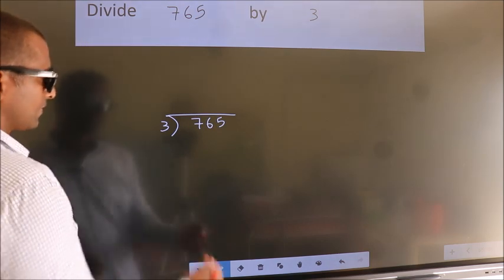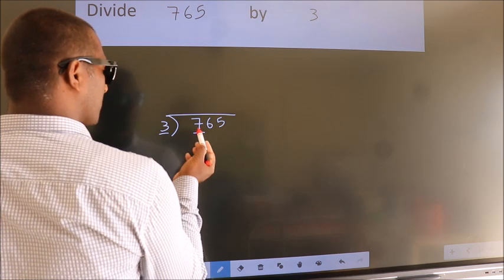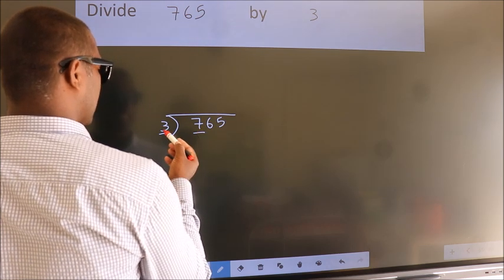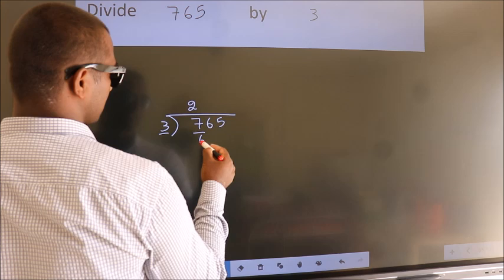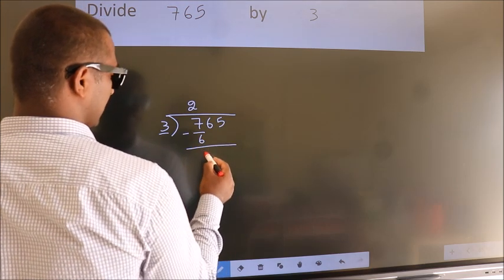Next, here we have 7, here 3. A number close to 7 in the 3 table is 3 twos, which is 6. Now we should subtract. We get 1.